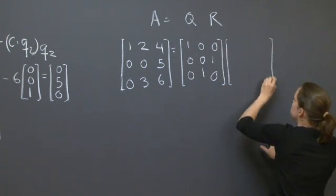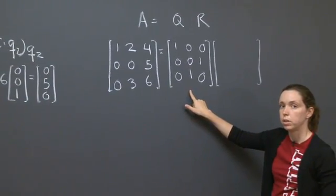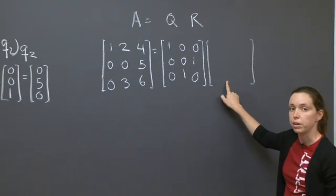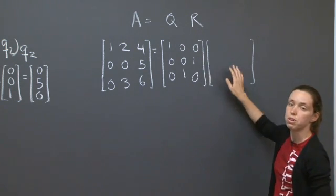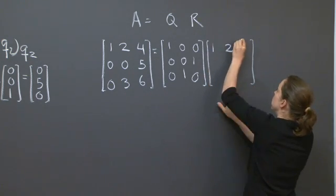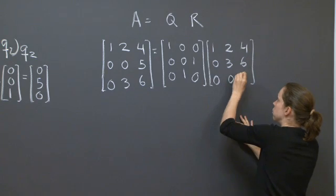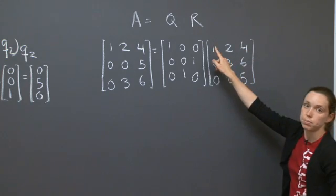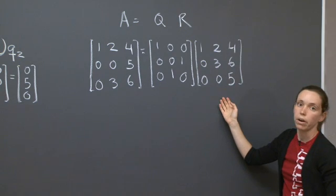Now we need an upper triangular matrix that makes this equality true. Take a moment to look at your matrix Q. It is simply a permutation matrix, so it's very easy to come up with a matrix that should fit here. What this permutation matrix does is it exchanges rows 2 and 3 from my matrix R to give you A. So you know what R must be. It must be 1, 2, 4, 0, 3, 6, that's the third row of A, and then 0, 0, 5, which is the second row of A. And indeed, R is upper triangular. This is your QR decomposition of the matrix A. Q is orthogonal, R is upper triangular.